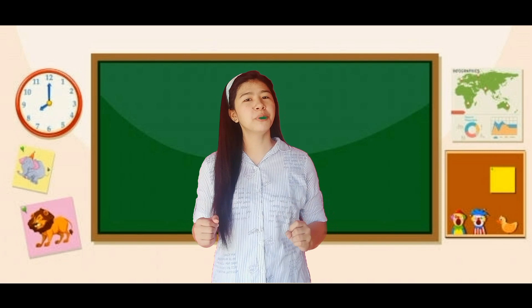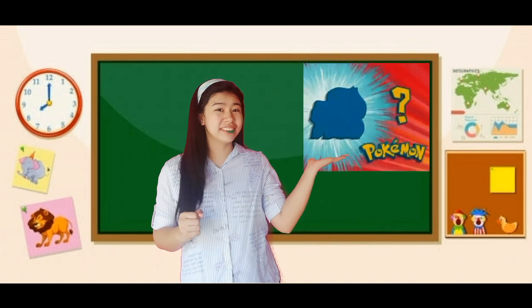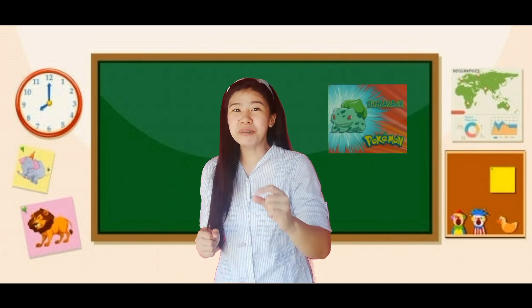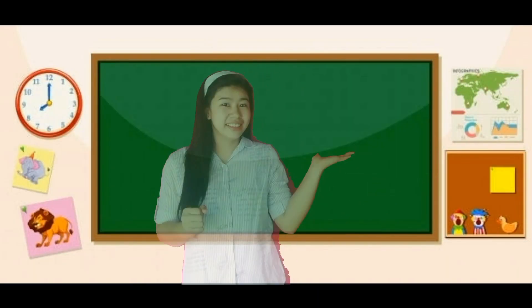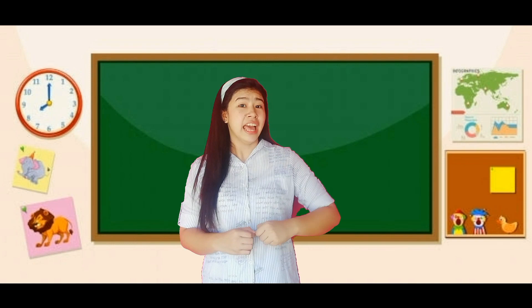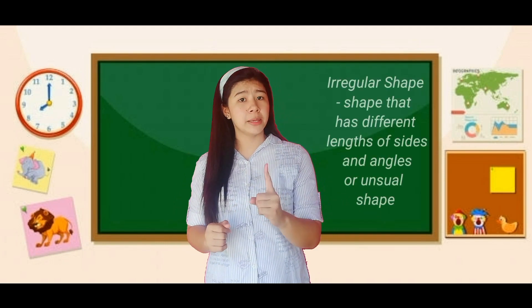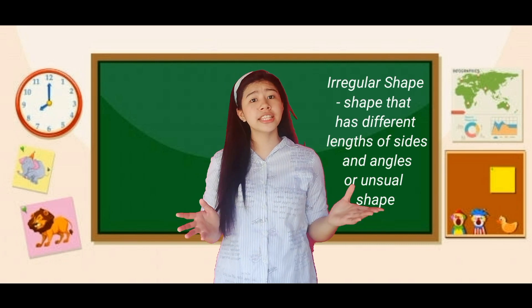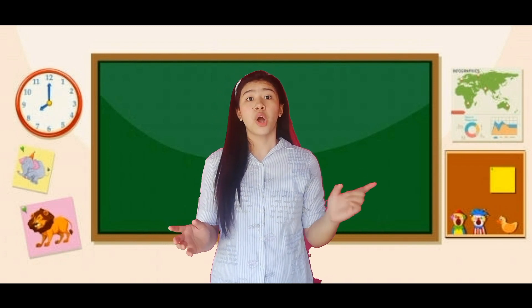But there's one more kind of shape. Can you guess who's this Pokémon? Those shapes are called irregular shapes. These shapes are those having different kinds of lengths, of sides, and angles from each other — in other words, unusual shapes.